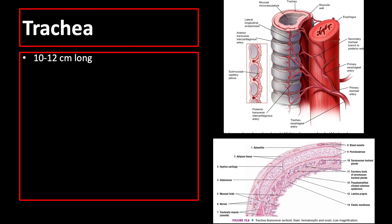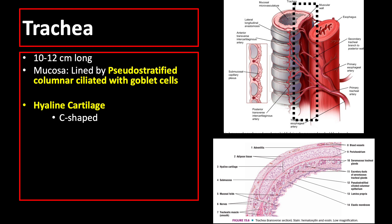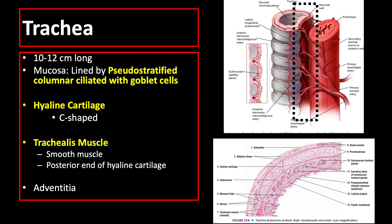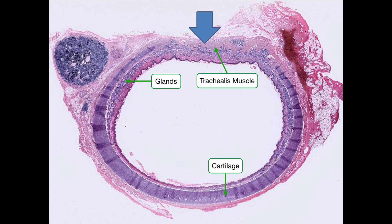The next structure is the trachea, which is 10 to 12 centimeters long. Its mucosa is lined by pseudostratified columnar ciliated epithelium with goblet cells. The trachea is equipped with C-shaped hyaline cartilage. The posterior part, which is in contact with the esophagus, is devoid of cartilage and is primarily made up of the trachealis muscle — a smooth muscle that relaxes during swallowing, allowing the esophagus to bulge into the tracheal lumen, with an elastic layer preventing excessive distension.